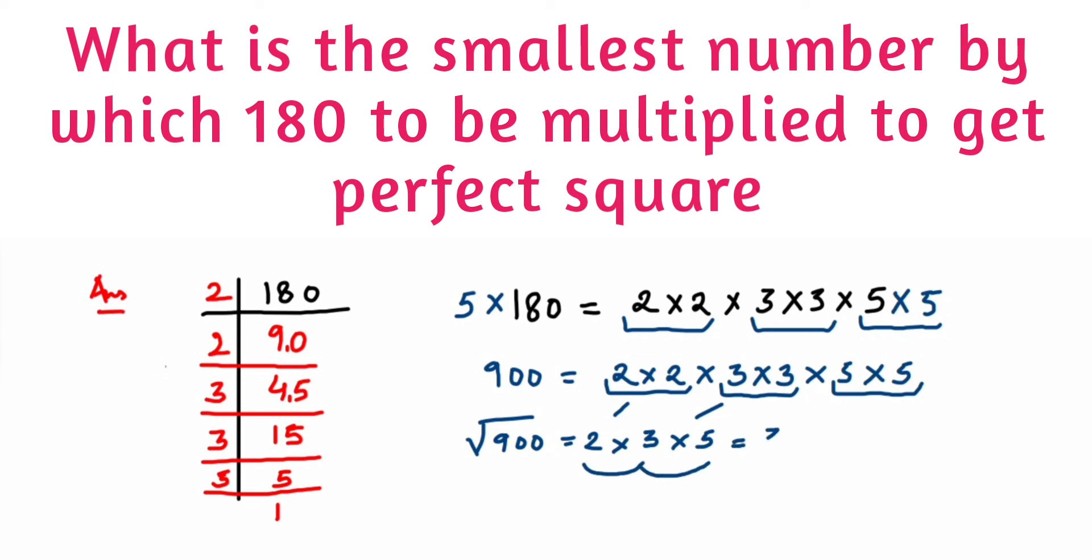So the square root of 900 is 30. I hope it's clear to you. If you have any questions or doubts, you can drop a comment below.